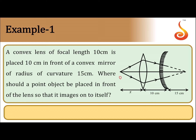In this problem we have an object, a convex lens, and a convex mirror. The light ray from the object falls on the convex lens, refracts, and then falls on the convex mirror.